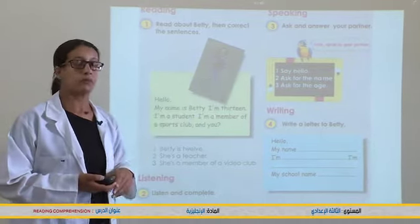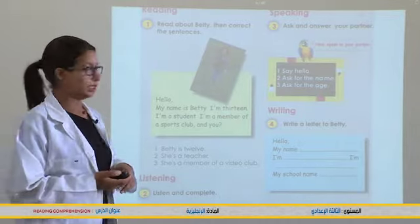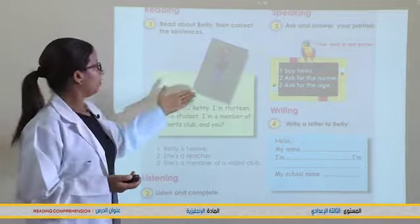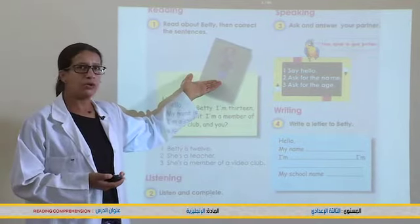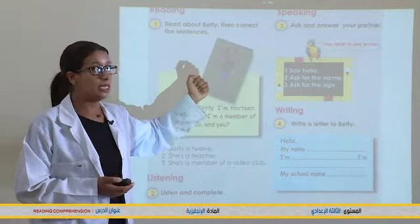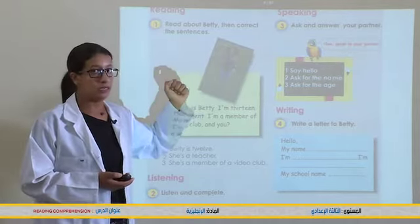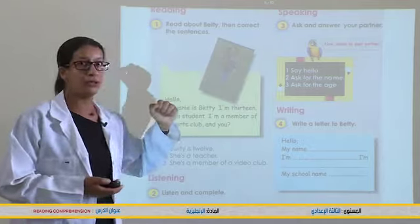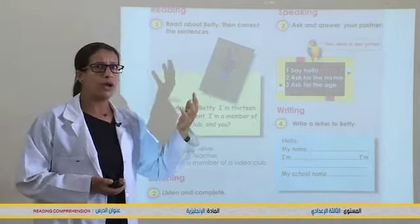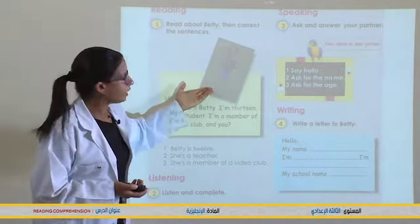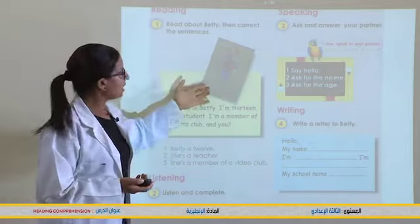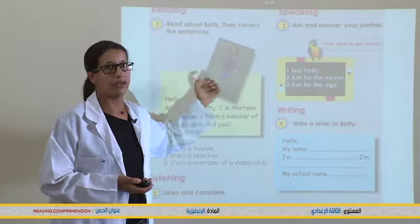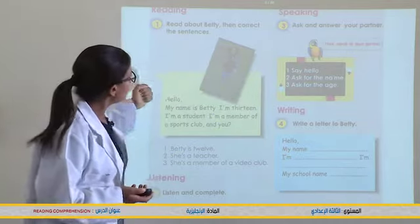That's correct. Yes, Betty is 13. Very good. Now look at the picture — who is this? Yes, she is Betty. Very good. She is a girl. Nice. Good. Where is she? Is she in the classroom? Is she at school? No — in the park. Yes, exactly, she is in the park.